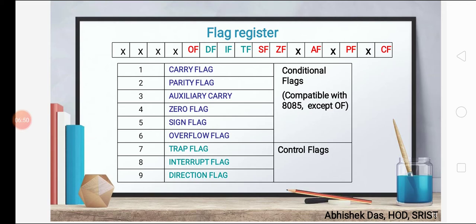There are 3 kinds of control flags: trap flag, interrupt flag, and direction flag. Trap flag is used for single-step control — it allows the user to execute instructions of a program one at a time for error detection. Interrupt flag: when it is set, interrupt is enabled; when it is 0, interrupt is disabled. Direction flag: when it is set, the source index and destination index are automatically decremented so data is processed from the highest memory location to the lowest memory location.